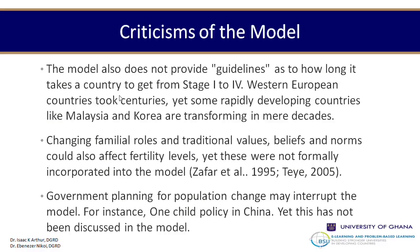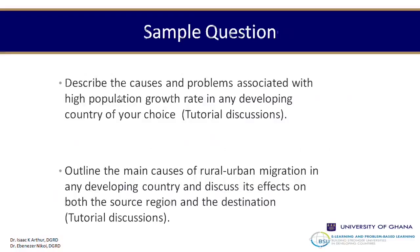Combining sessions seven and eight, it should now be possible to answer questions about the causes and problems associated with high population growth rates in developing countries. Some of what follows on rural-urban migration will also be helpful in answering questions about the effects migration has on source and destination regions.